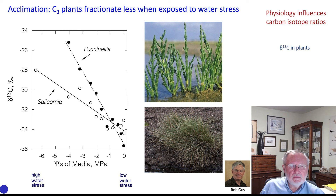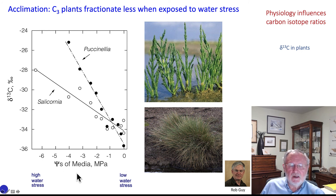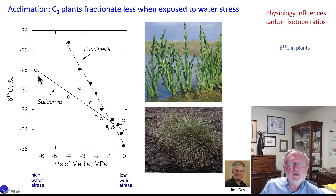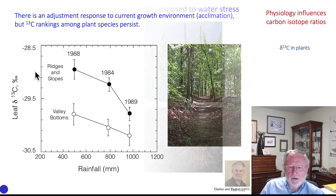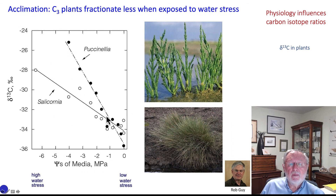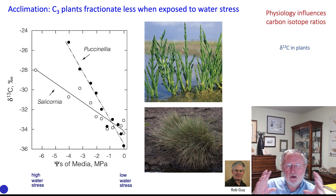We also see an acclimation response in plants exposed to water stress. In this case we look at halophytic plants — plants growing essentially in water all the time — but with variation in the salinity of that water as measured by the water potential of the media. From a low water stress condition (essentially salt-free) to a high water stress situation (essentially very salty), the carbon isotope ratios become progressively heavier as plants are exposed to saltier environments. This variation in Puccinellia and Salicornia is a stomatal variation: when exposed to saltier environments, the plants close their stomates and we have lower CI/CA ratios as salinity increases.